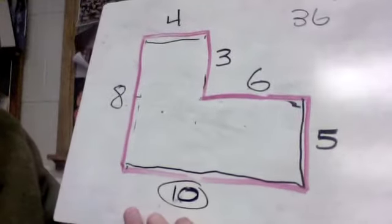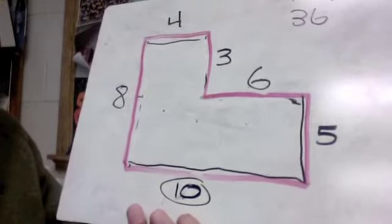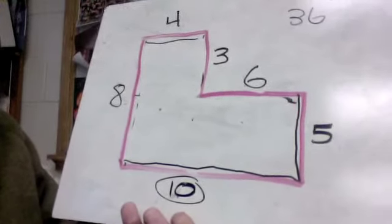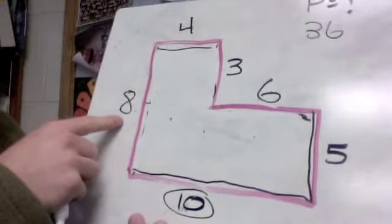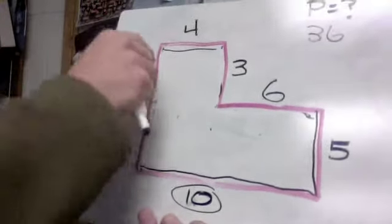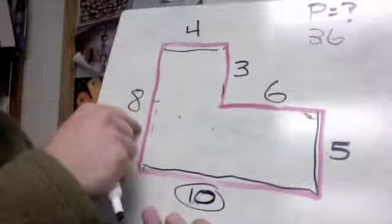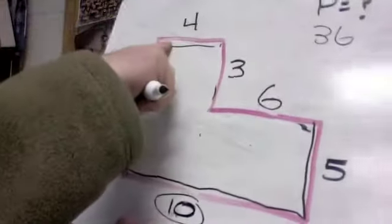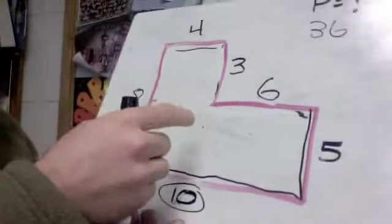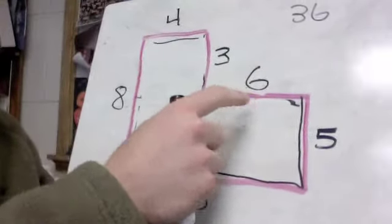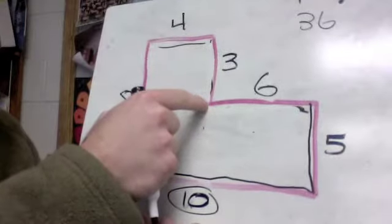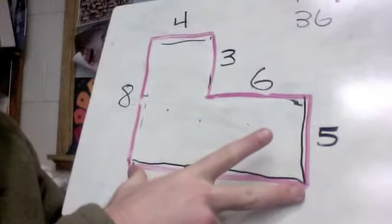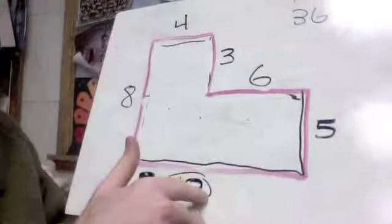Just keep in mind you need lines going the same direction as your missing ones. This side was missing, so we found all the up-and-down lines to total it — 3 and 5 equals 8. Going side to side, we didn't know what that side was, but whatever those two lengths are had to equal the whole thing going side to side. So 4 plus 6 was 10.